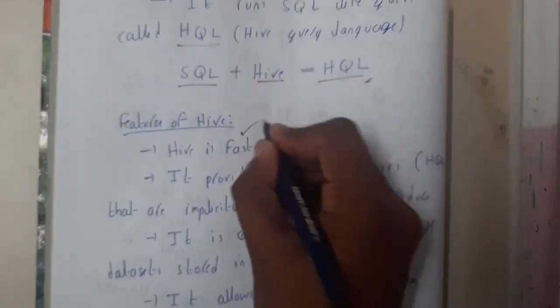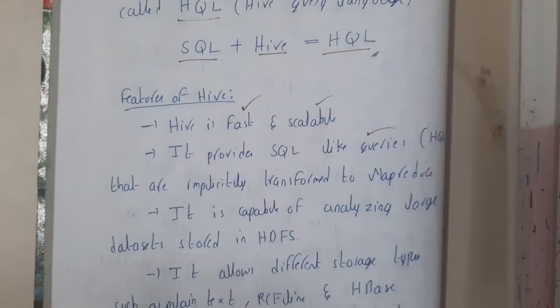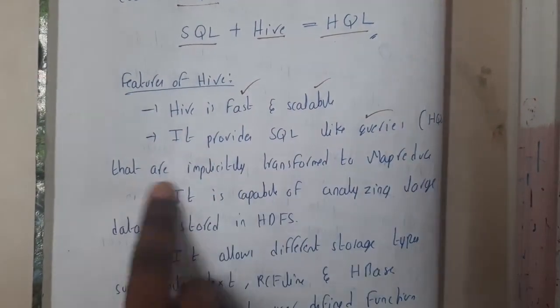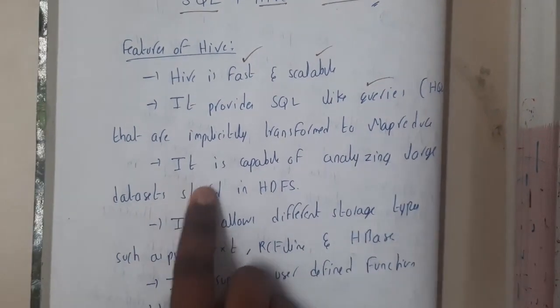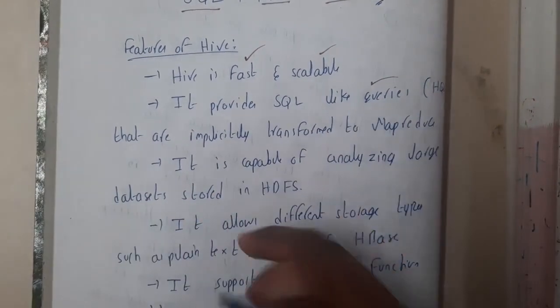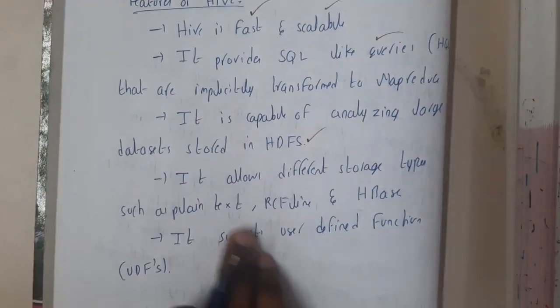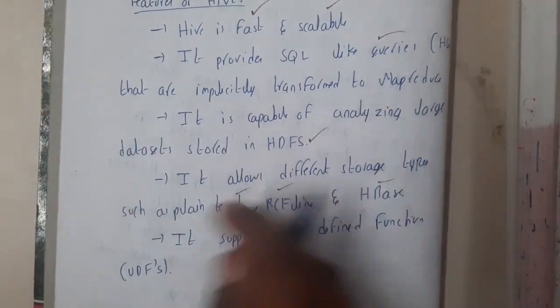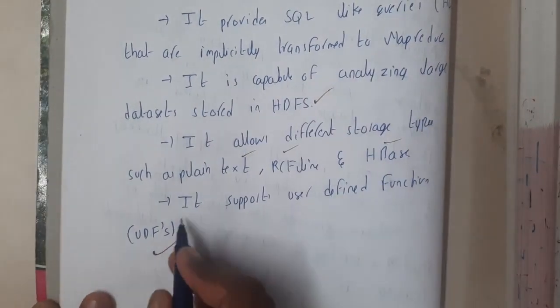Some features of Hive: it is fast and scalable, and it provides SQL-like queries which are implicitly transformed into MapReduce jobs. It is capable of analyzing large data sets stored in HDFS. It allows different storage types such as plain text or any kind of format. It also supports user-defined functions, known as UDFs.